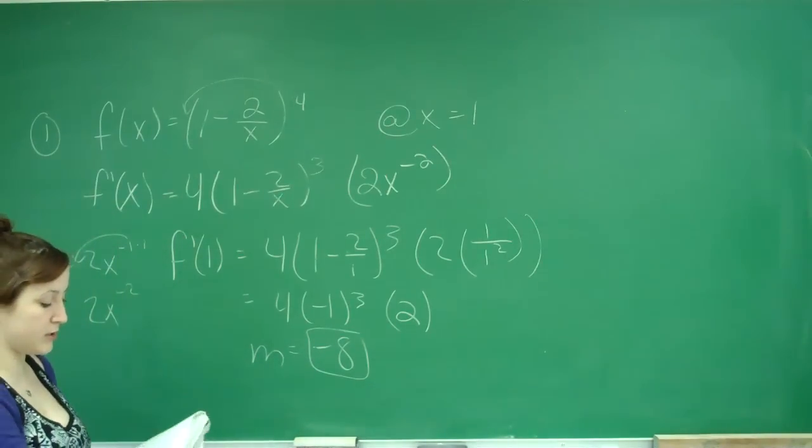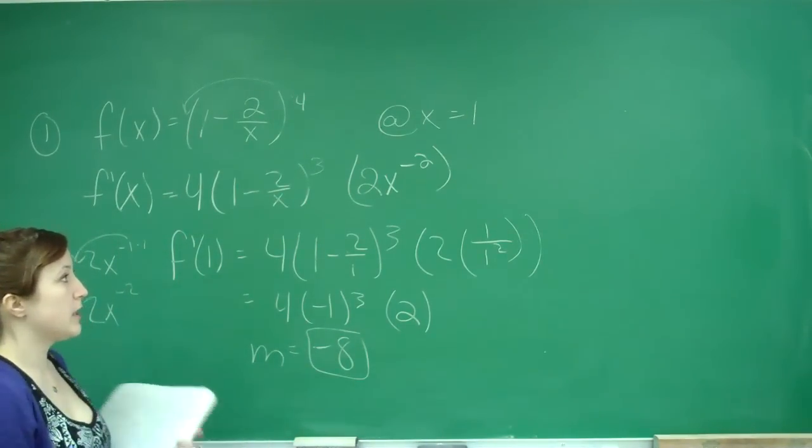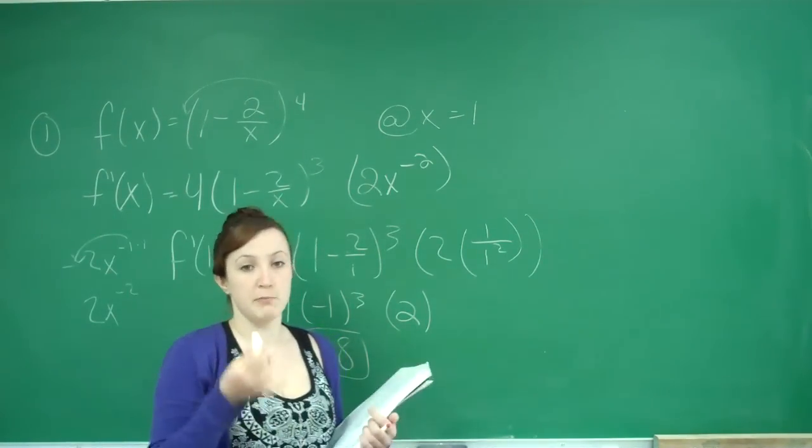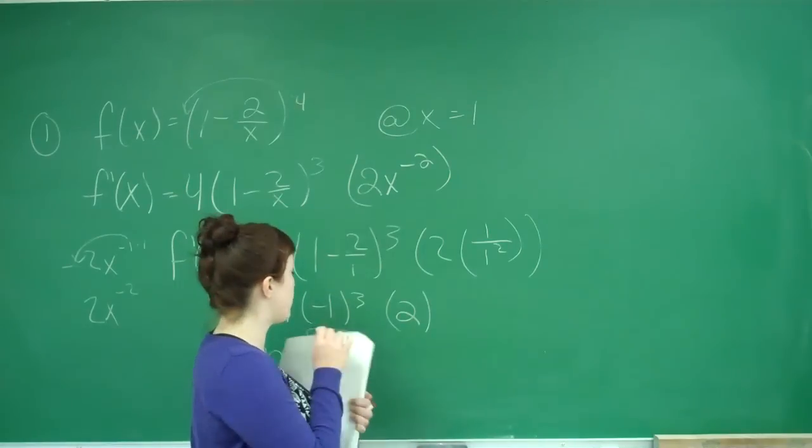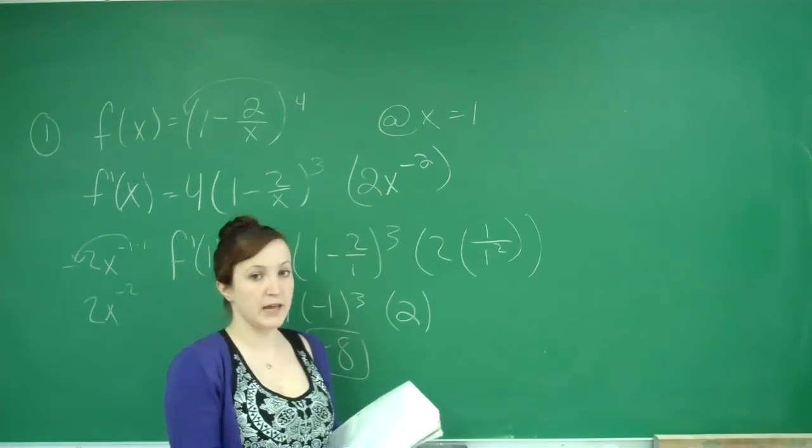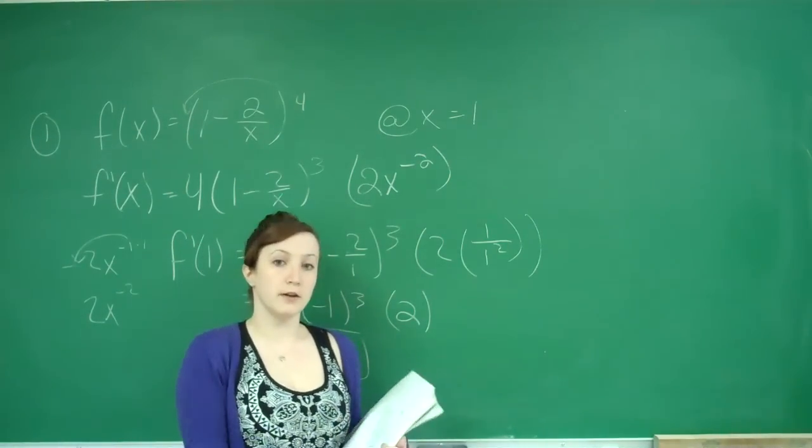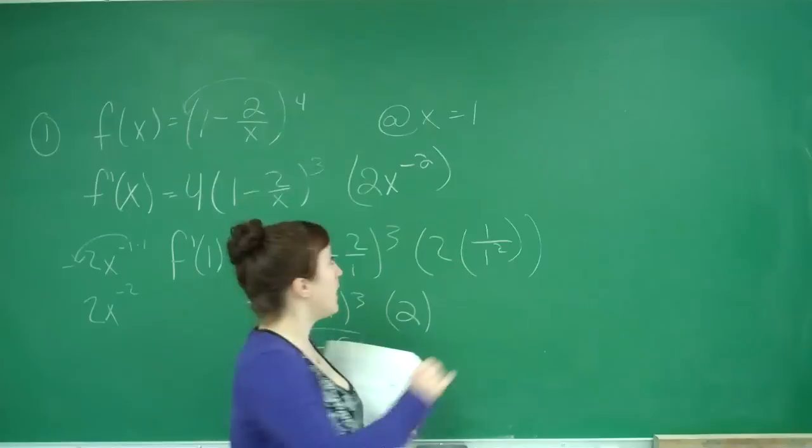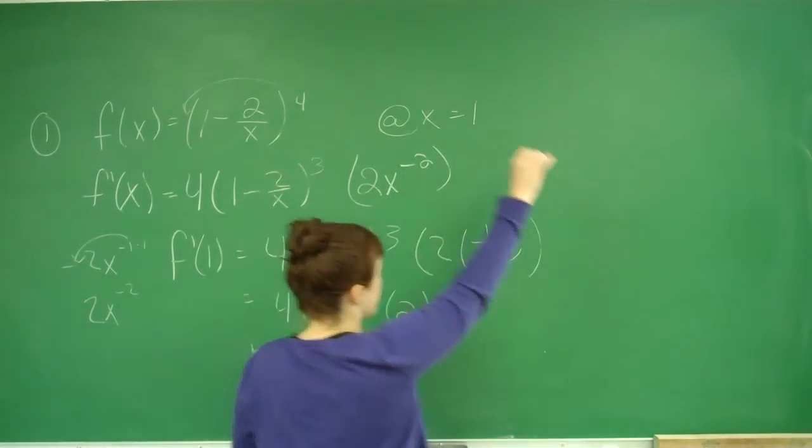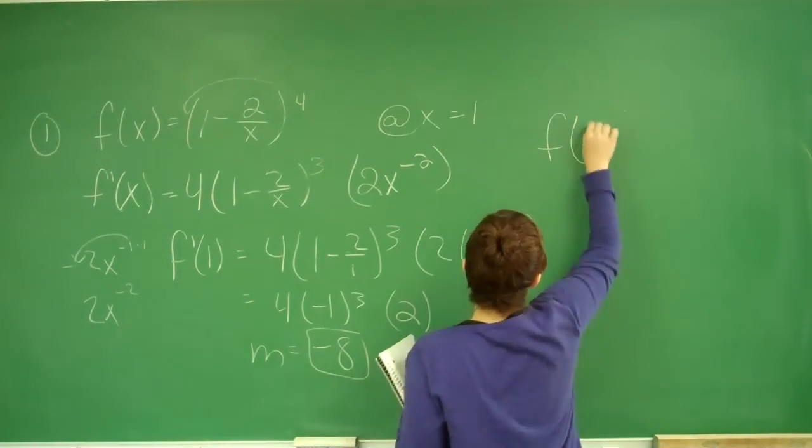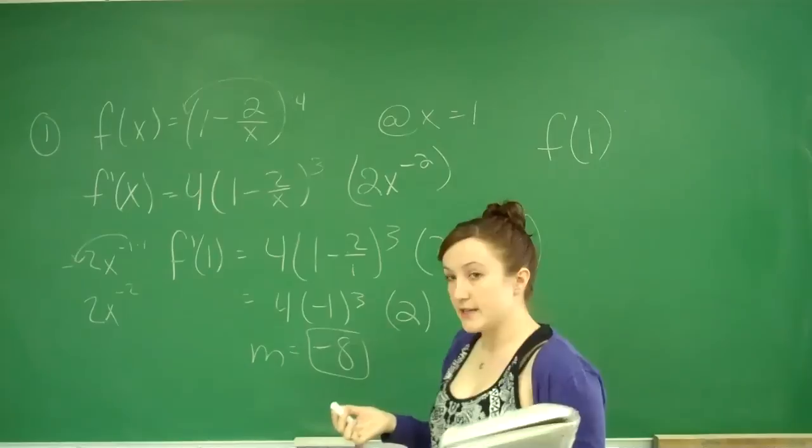We're not done yet. That's just the slope. To find a line, we need a point and a slope. So far we have the slope, now we need the point. We have our x value, we just need the y value. We're going to go back to the original function f(x).